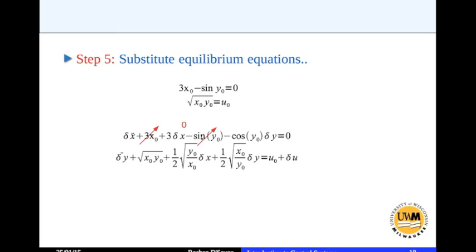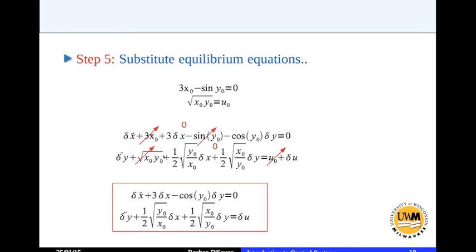That goes to 0. And then you have root of x0 y0 equal to u0. So you have u0 here, root of x0 y0 here. Those go to 0. And that results in our linearized equations about the operating point x0 y0 u0.